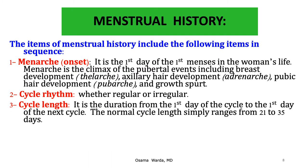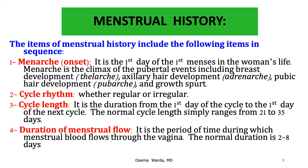After obtaining the date of menarche, we ask for the cycle rhythm — whether it is regular or irregular. The cycle length is the duration from the first day of one cycle to the first day of the next cycle; the normal cycle length ranges from 21 to 35 days. The duration of menstrual flow is the period during which menstrual blood flows through the vagina; the normal range is two to eight days.